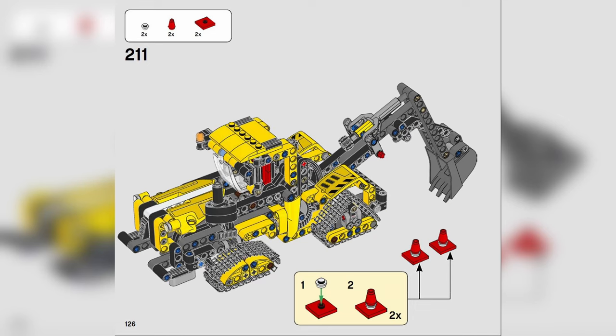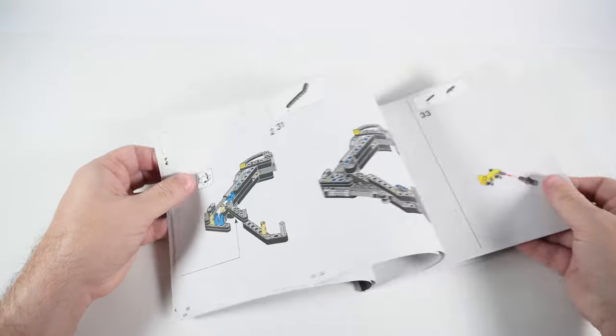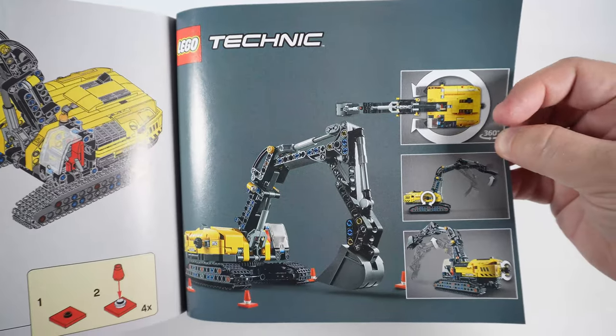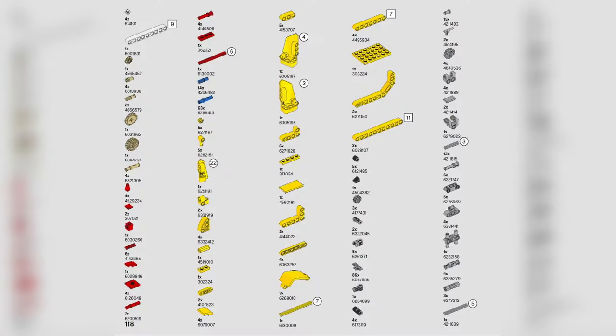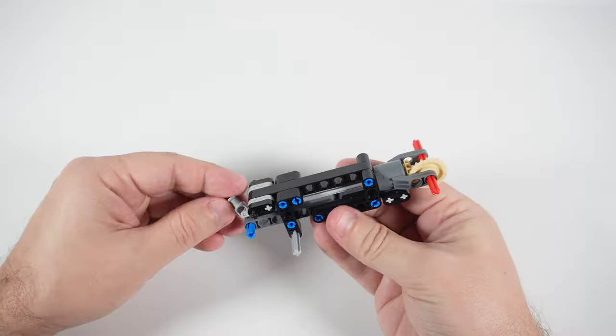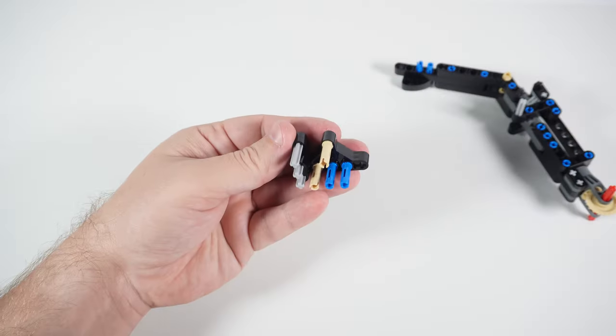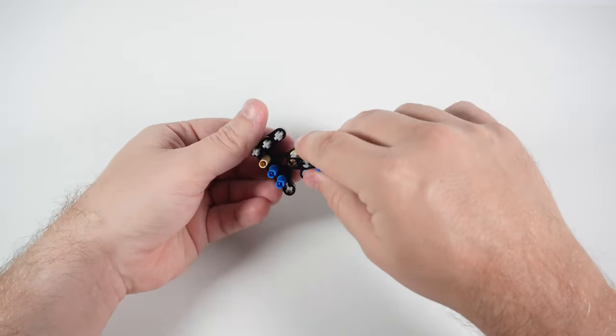Instructions are traditionally clear and easy to follow. At the end of each book there is a page with a short graphical description of main functions and a list of parts. A couple of words about pieces: that's a true Technic set, so you'll find just a few regular pieces, curved slopes and tiles. The absolute majority of pieces are beams, pins, gears and axles.